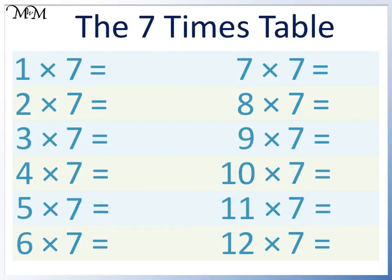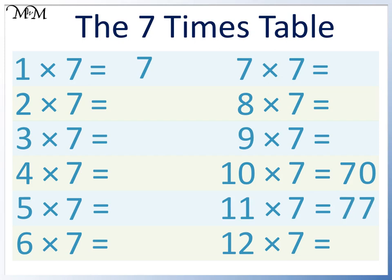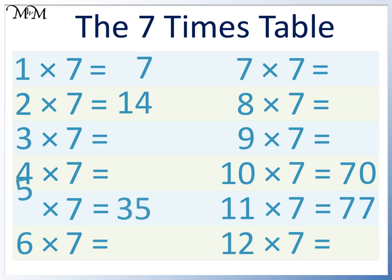Here is our 7 times table in order of difficulty. 1 times 7 equals 7. 10 times 7 equals 70 — multiplying by 10, the number ends in a zero. 11 times 7 equals 77 — in the 11 times table we repeat the digits. 2 times 7 equals 14, because 7 plus 7 equals 14. 5 times 7 equals 35, which ends in 5.